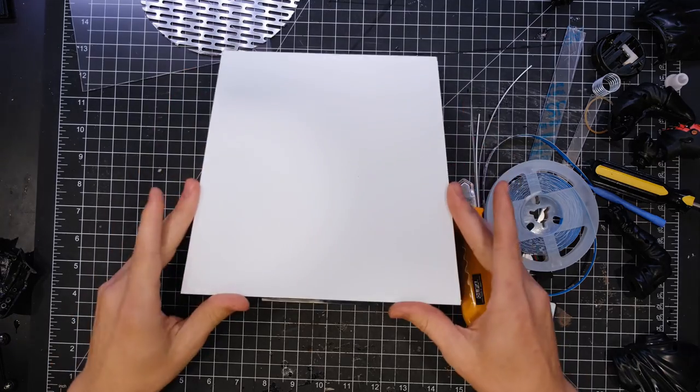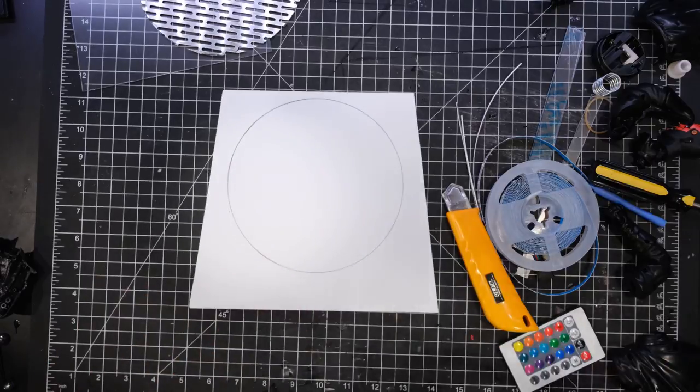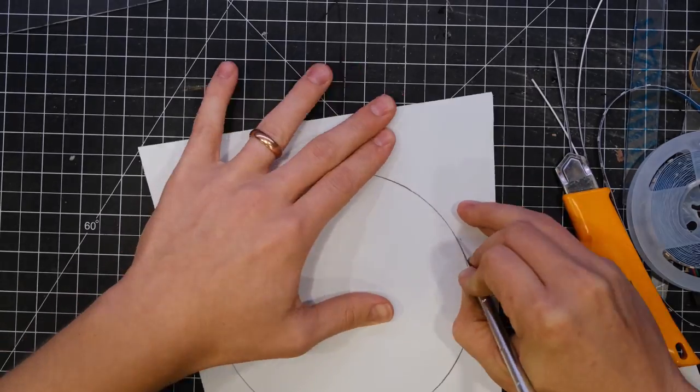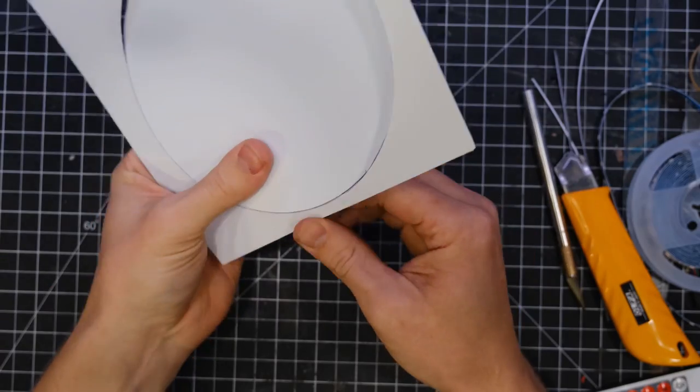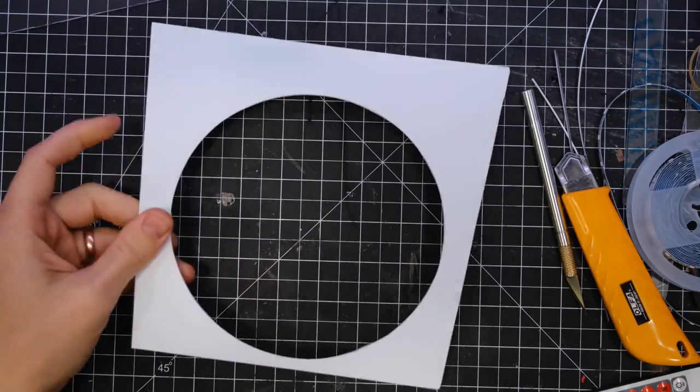Then cut out a piece of styrene the same size as the top of the base. I flipped it over, traced out a circle, and cut that out with an X-Acto knife. All you have to do is score it and it snaps out really easily. I also saved the little disc because I'm going to be using that later.